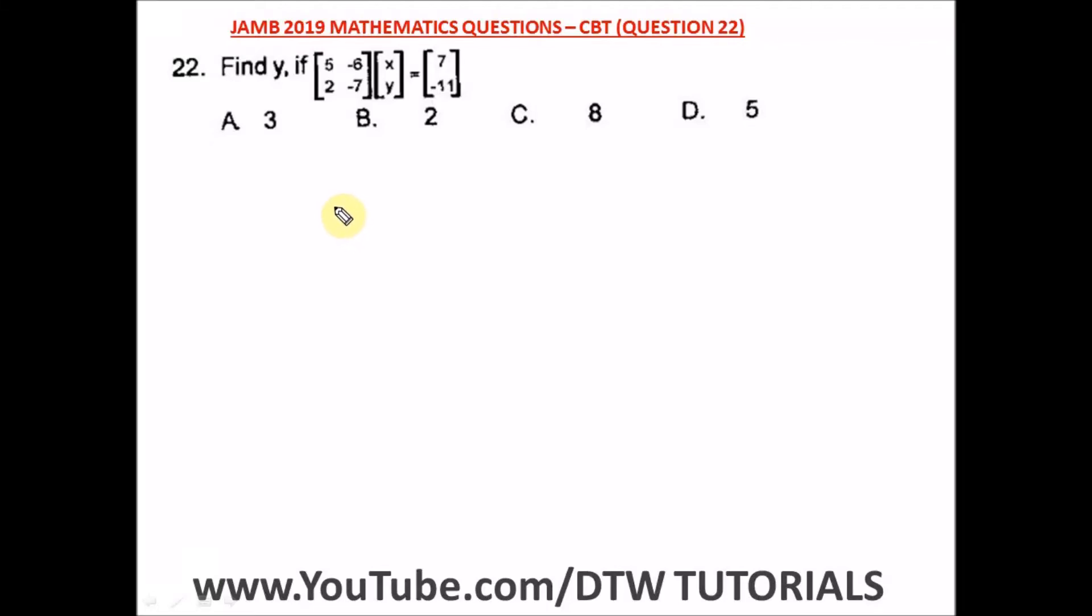Question 22 of the JAMB 2019 mathematics past question, that's your UTME CBT exam. It says find y if we have this matrix. So let us open up this. We have this particular column will multiply x and y, this column will multiply this, and it will equate to 7 and minus 11.